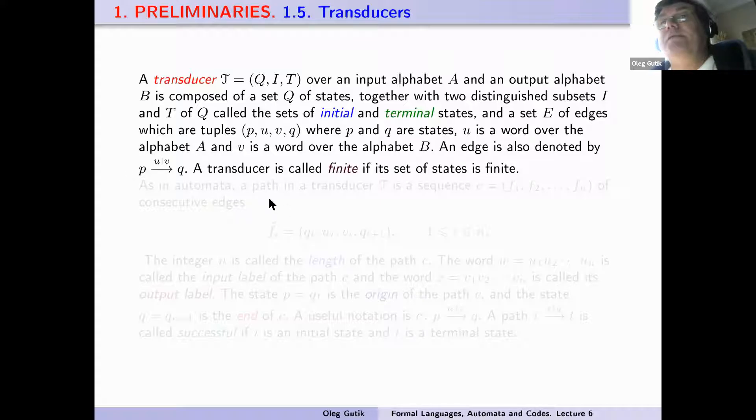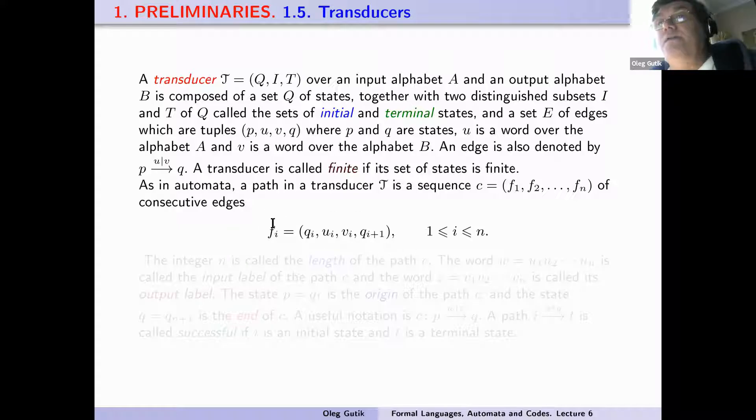A transducer is called finite if its set of states is finite. As in automata, a path in a transducer T is a sequence C which consists of e1, e2, ..., en of consecutive edges ei of the form (qi, ui, vi, qi+1), where i ranges from 1 to n. The integer n is called the length of the path C.